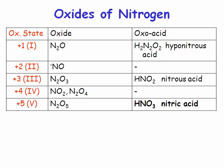All oxides of non-metal elements, if you treat them with water, give you the acids. So these oxides of non-metal elements are known as the anhydrides of the respective acid. Nitrous oxide is the anhydride of hyponitrous acid. N₂O₃ is the anhydride of nitrous acid, not to be confused with nitric acid.